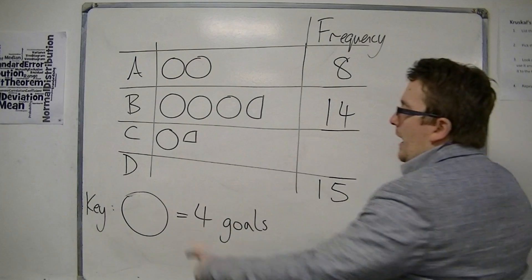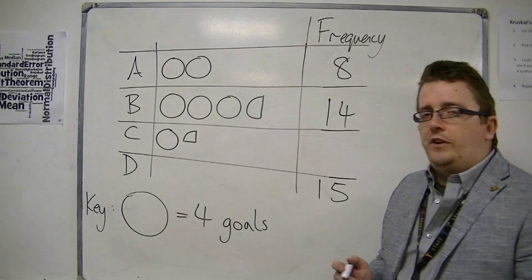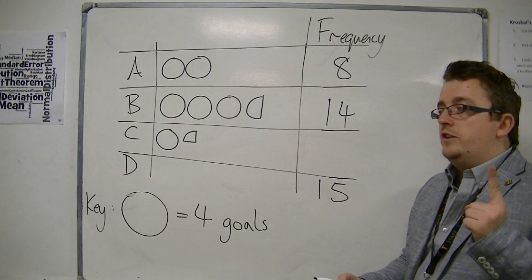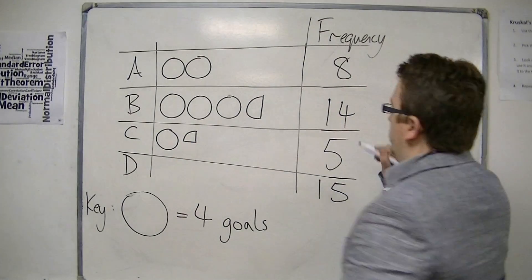Now player C has four goals with that whole circle, but then we've got a quarter circle. And a quarter of a circle must represent just one goal. So four goals plus the one is five goals.